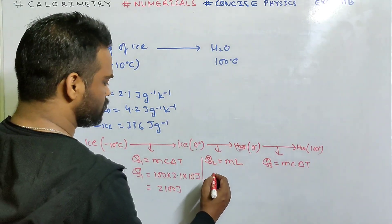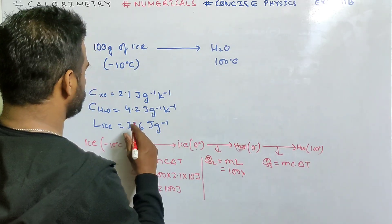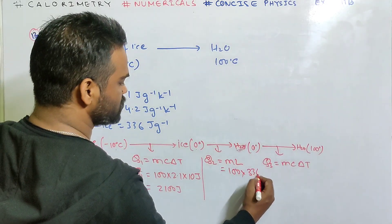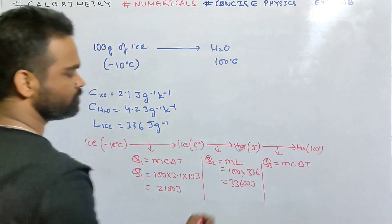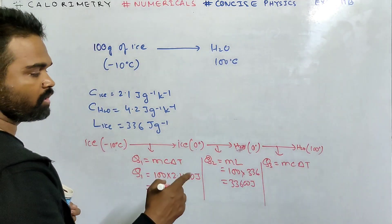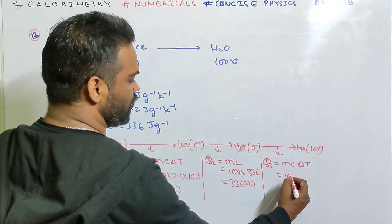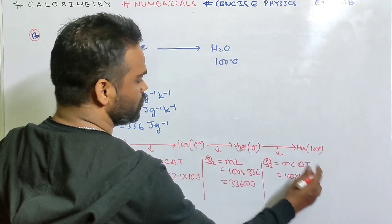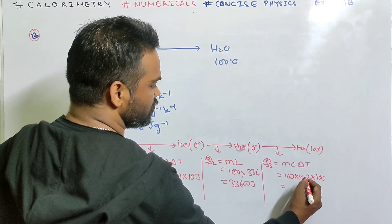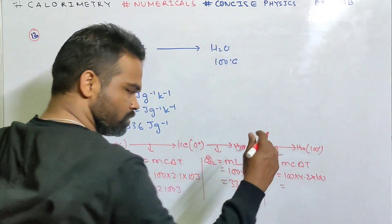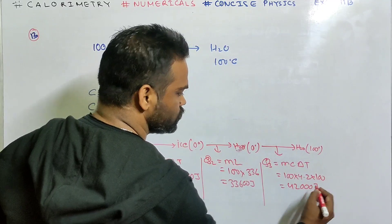Q2 is ML for change of state: M = 100 g, L = 336 J/g. So Q2 = 100 × 336 = 33,600 joule. Q3 is MCT for water warming: M = 100 g, C = 4.2 J/g/K, ΔT = 100. So Q3 = 100 × 4.2 × 100 = 42,000 joule.